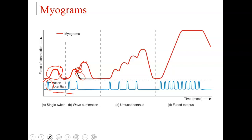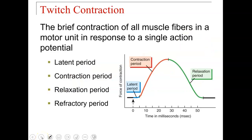With unfused tetanus, more signals come from the brain, and each one causes the contraction to go higher and higher. With fused tetanus — the fourth type — many action potential signals come in rapidly from the brain, so it goes straight up in a sharp incline and stays contracted until it eventually comes back down. The twitch contraction is a brief contraction of all muscle fibers in a motor unit in response to a single action potential. It includes a latent period in blue, a contraction period in red going up, then a relaxation period starting at the peak and coming back down, followed by a refractory period flatlined in black.